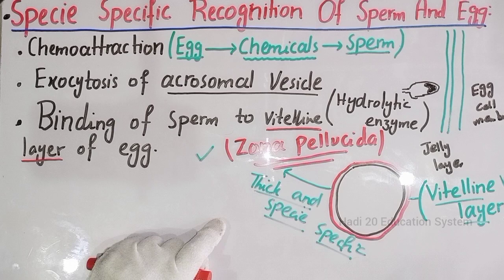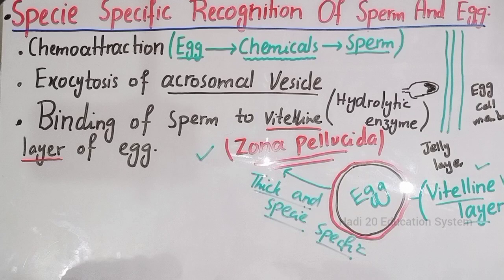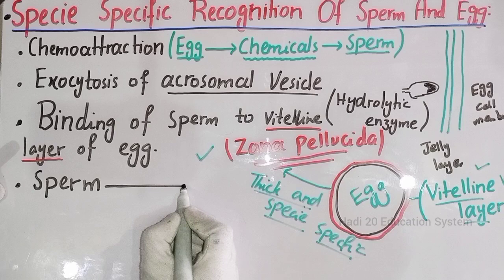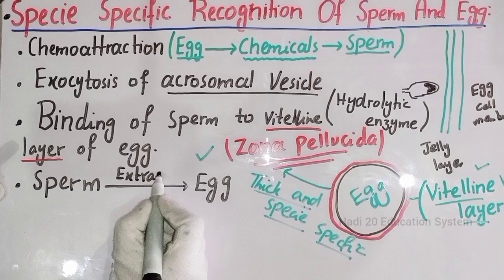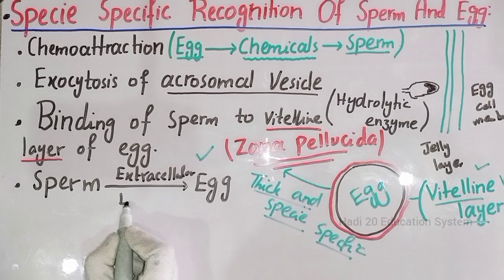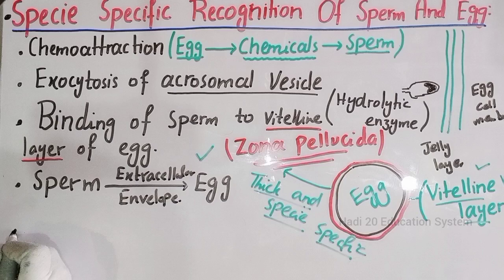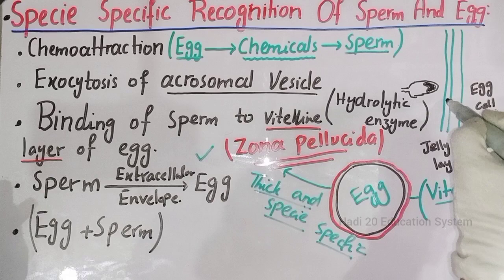Is that clear? We have a protective layer called the vitelline layer, also known as the zona pellucida. Here we have three key points. The next point is that the sperm is passing through, which is not easy, because there are extracellular envelopes. There will be a lot of processes in which the sperm cell passes through.